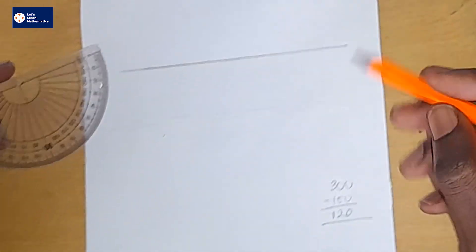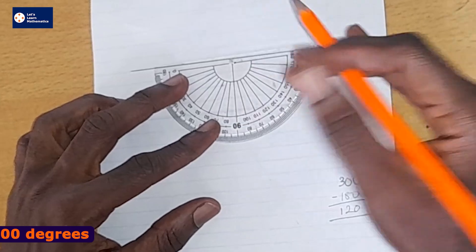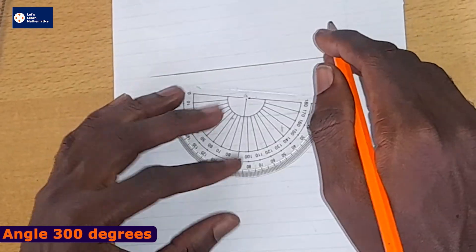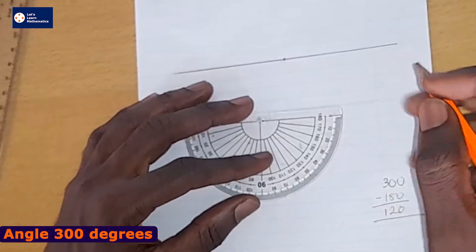So let's do that. Let's draw the 120 degrees or 60 degrees down here. But first, we need to indicate a point on the line. So that is what I've done.